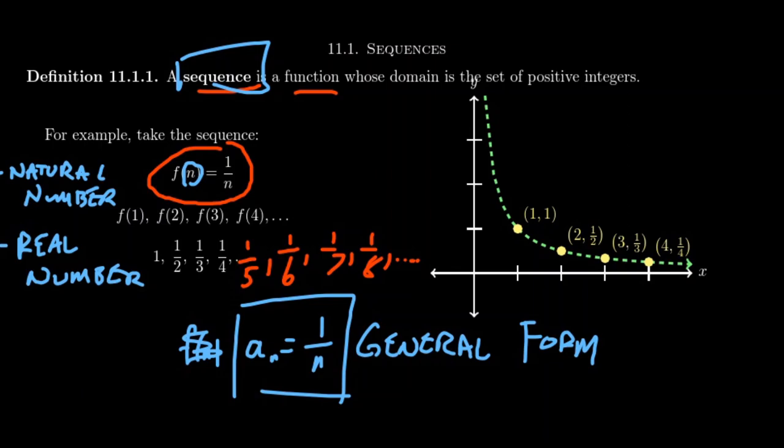For example, we can graph these things. Now when it comes to graphing a sequence, these points are isolated in the plane. You have the first point (1, 1), the second point (2, one-half), the third point (3, one-third), the fourth point (4, one-fourth), etc.